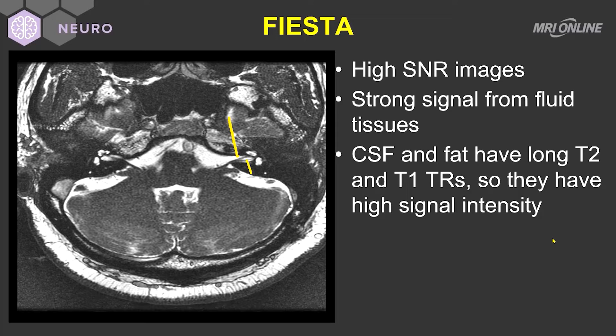We can see that this cranial nerve, marked as number one, is anteriorly located. Depending upon whether we're at the upper or lower portion of the internal auditory canal, if it's anterior and inferior, it's going to be the cochlear nerve. Whereas if it's anterior but superior, it's going to be one of the superior vestibular nerves. What's posterior here, marked as number two, in the internal auditory canal — posterior and inferior — is going to be a portion of the inferior vestibular nerve.